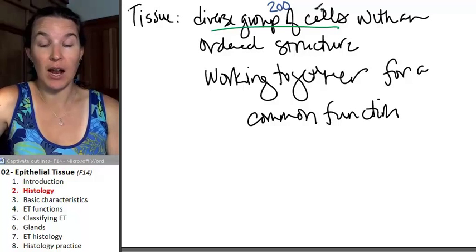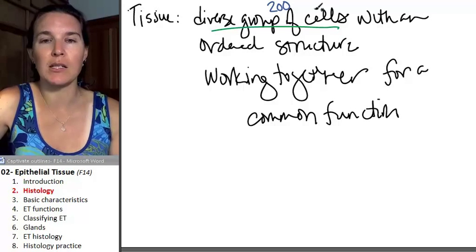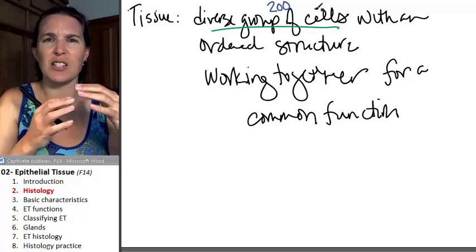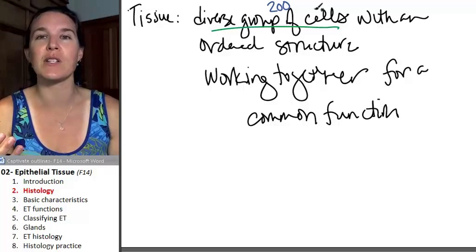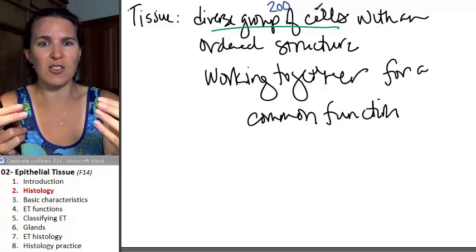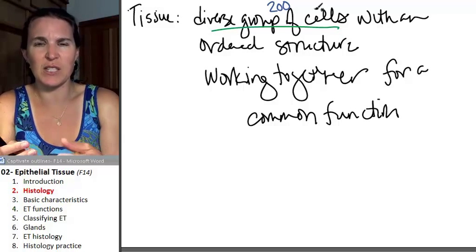That number is a lot higher if you look it up on Wikipedia. And we think the reason why it's a lot higher is because there are different kinds of, say, lymphocytes, and there are different kinds of T lymphocytes, and then there's different kinds of killer T lymphocytes.